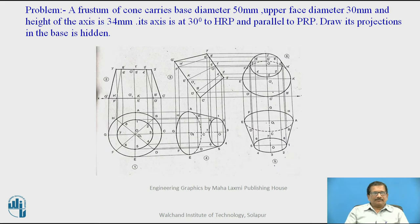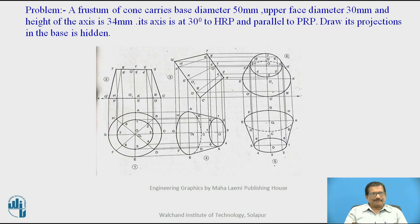This is related to frustum — frustum of a cone. What is frustum? A frustum is the solid of which a section parallel to the base is taken and the top portion is removed. Suppose it is a cone. Cone has an apex, so the apex will be removed at the particular given height. Suppose the apex height is 50 mm and the frustum height is 32 mm, then an 18 mm part of the cone will be removed by a horizontal line parallel to the base.